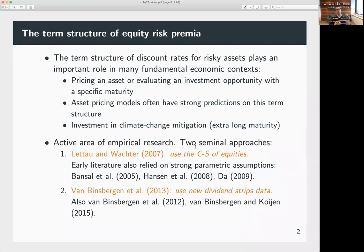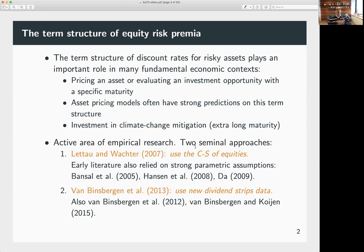Before I tell you what we do, I want to review the two main approaches people have used to think about this problem. One idea, pioneered in the early 2000s, was to learn about the different perception of risk across horizons by looking at equities or other traded securities — extracting discount rates from prices and cash flows and exploiting the fact that different securities are differentially exposed to different risk types.